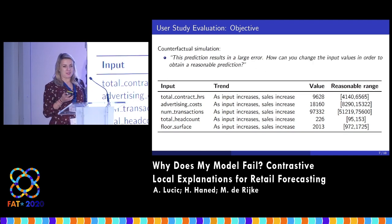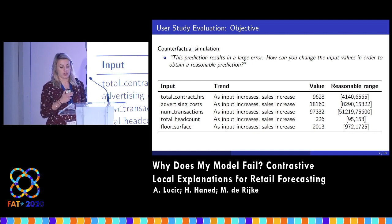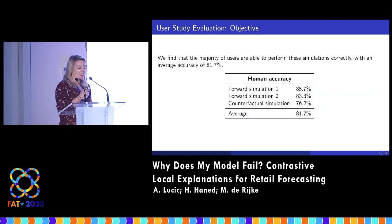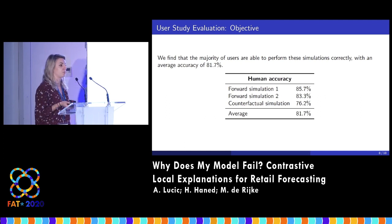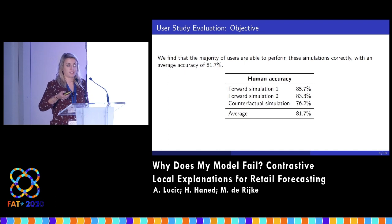Here's the counterfactual simulation. This is slightly different — we give the same explanation but tell you this does result in a large error. What can you do to change the input values in order to change the prediction? [Audience: Lower them.] Excellent. We found that people were able to do this: 81%, or almost 82%, overall accuracy to perform these simulations. This tells us that users are able to both interpret our explanations and use them in an actionable way to understand how to change the input in order to change the output.